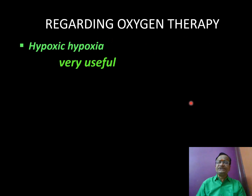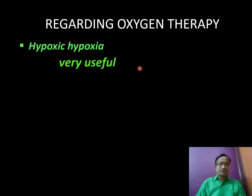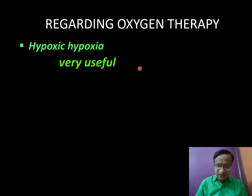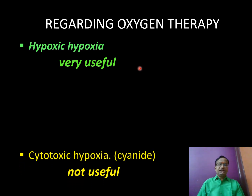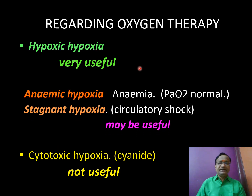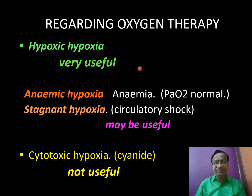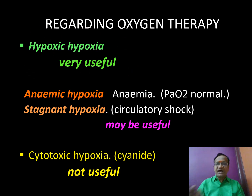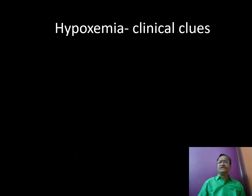Regarding oxygen therapy and types of hypoxia — hypoxic hypoxia, anemic hypoxia, stagnant hypoxia, cytotoxic hypoxia. Oxygen therapy is very useful in hypoxic hypoxia, not at all useful in cytotoxic hypoxia, and may be partially useful in the intermediate — anemic or stagnant — types.